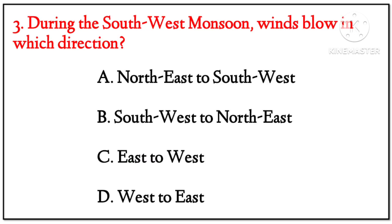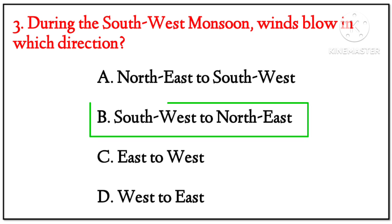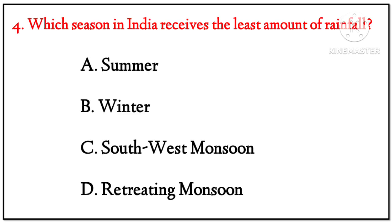(3) During the southwest monsoon, winds blow in which direction? Options: Northeast to Southwest, Southwest to Northeast, East to West, West to East. Answer: Southwest to Northeast.